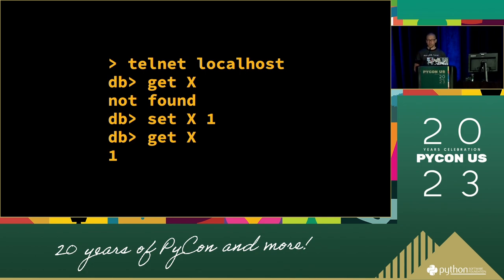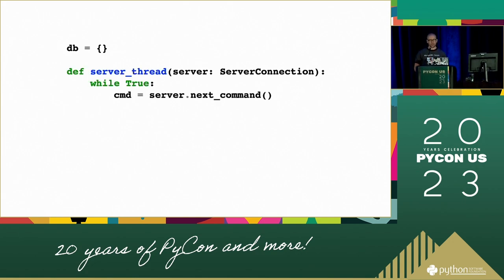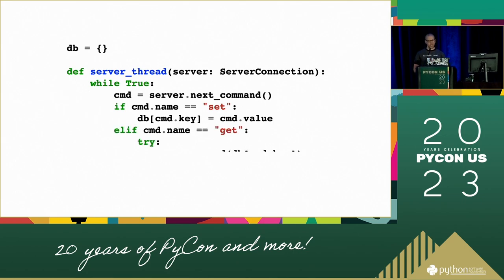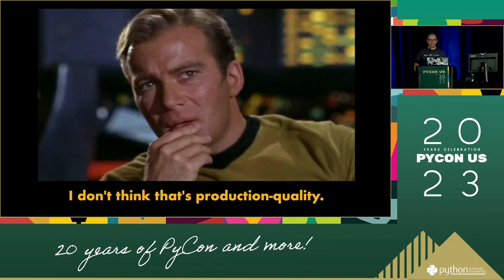Let's look at the code. It stores its data in memory in a dict. Whenever a client connects, the server starts a thread and processes commands. If the command is set, we store the data in the dict. If it's a get, we try to return the value or say not found. Obviously, this is just demo code with lots of problems. The only problems we're going to focus on today are the anomalies — what happens if two people use this database at the same time?